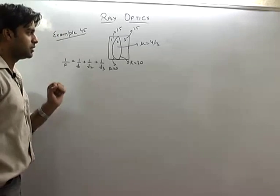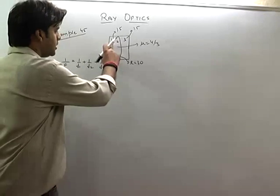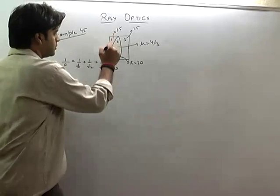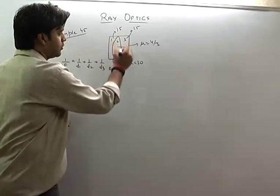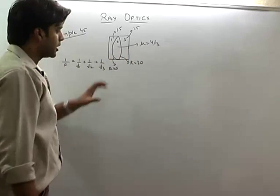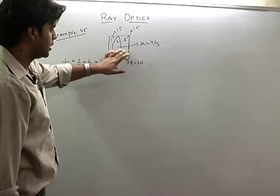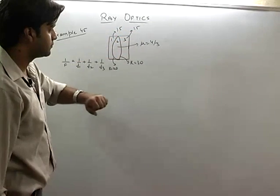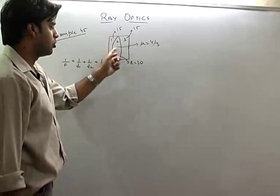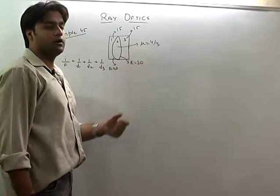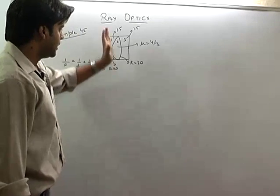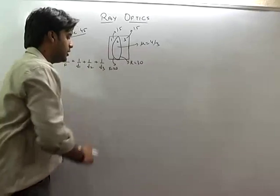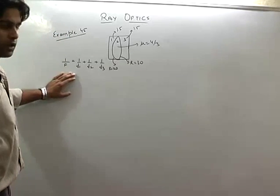Now let us see an example. There are two plano-convex lenses — one is lens 1 and one is lens 3 — and we have water in between. The refractive index of glass is 1.5, and the refractive index of water (mu) is 4/3. One convex side radius is 30, and one is 20. Now we have to find the net focal length.